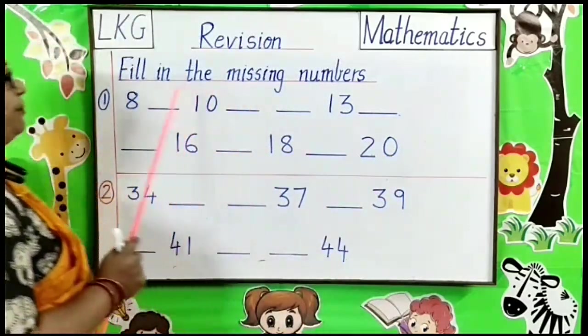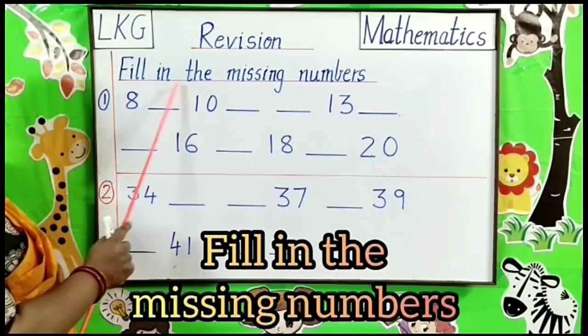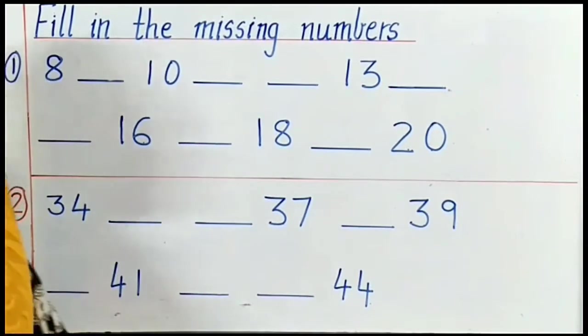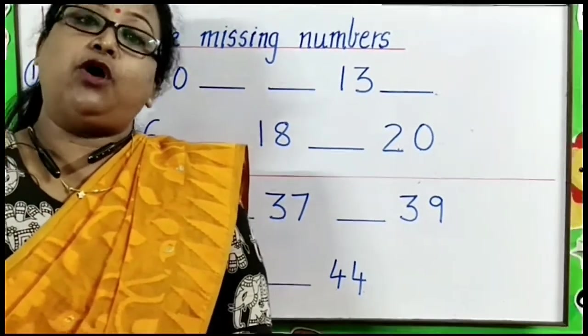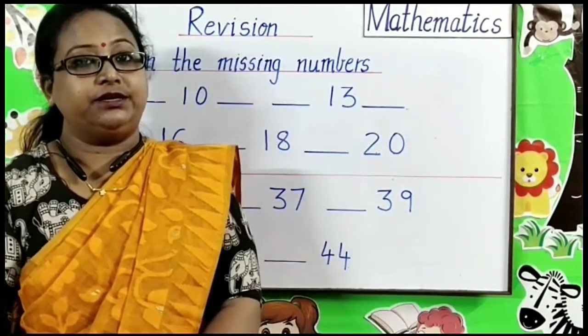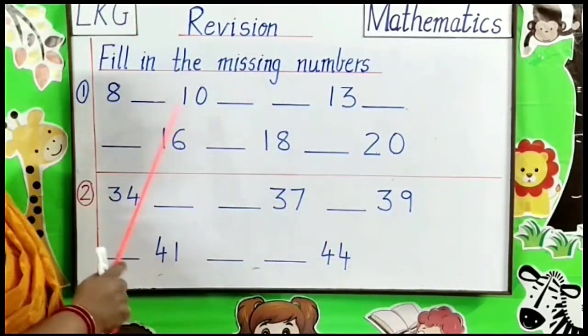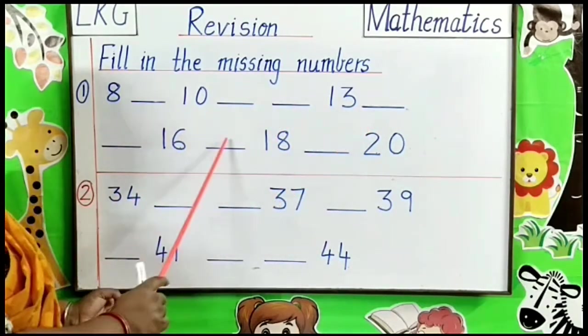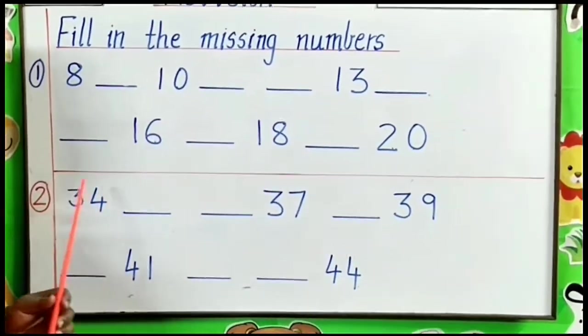Our first topic is fill in the missing numbers. Children, now we all know counting numbers 1 to 50. So, we have to fill only the missing numbers here. Let's start.